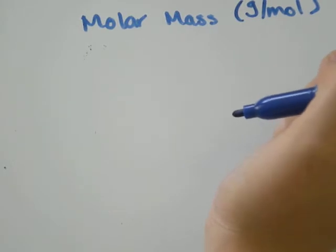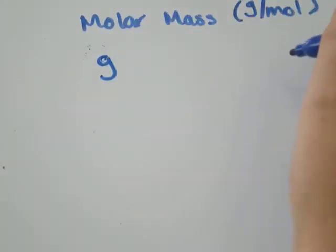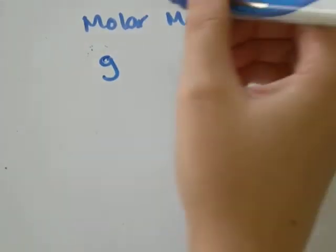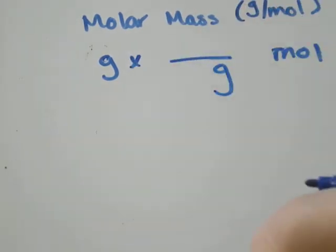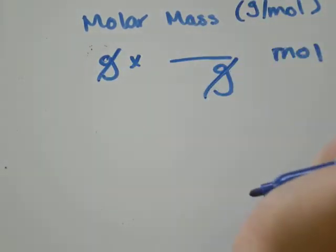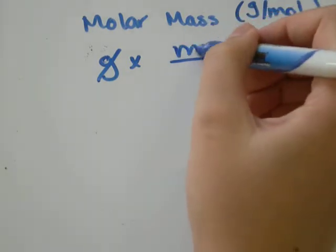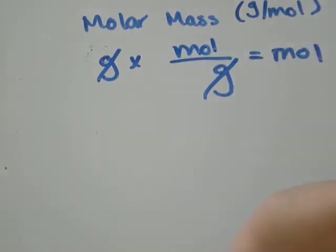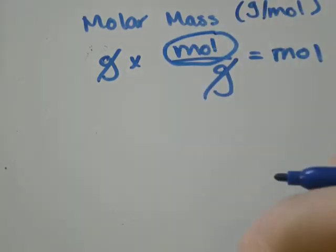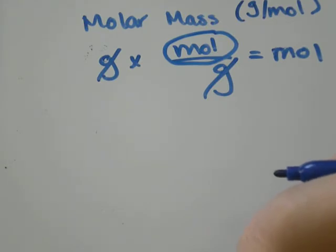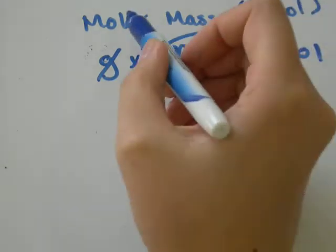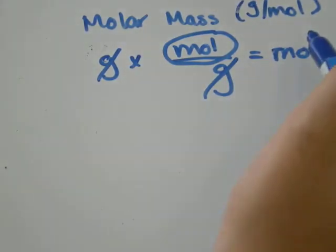So if we're starting with grams, and we're going to end up with moles, we need to be multiplying by something that has grams on the bottom so that the units of grams will cancel out, and mole on the top, so that we'll just be left with one unit in terms of moles. And so, wouldn't the molar mass, if it was flipped over, be in moles per gram? Yes, it would. So we'll use the molar mass again.